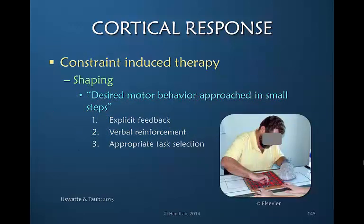Constraint-induced therapy uses a technique called shaping. My suggestion is that we, as therapists treating the stiff hand, consider the elements of shaping which may be of use to our patients who have not had a CVA. You approach a desired motor behavior in small steps, looking at the components. You provide precise, explicit feedback. You reinforce when the activity is done correctly, and you choose tasks that are physically possible to successfully accomplish. An example would be starting with a larger object requiring gross grasp, with the object size decreasing over time to require much greater fine motor involvement.